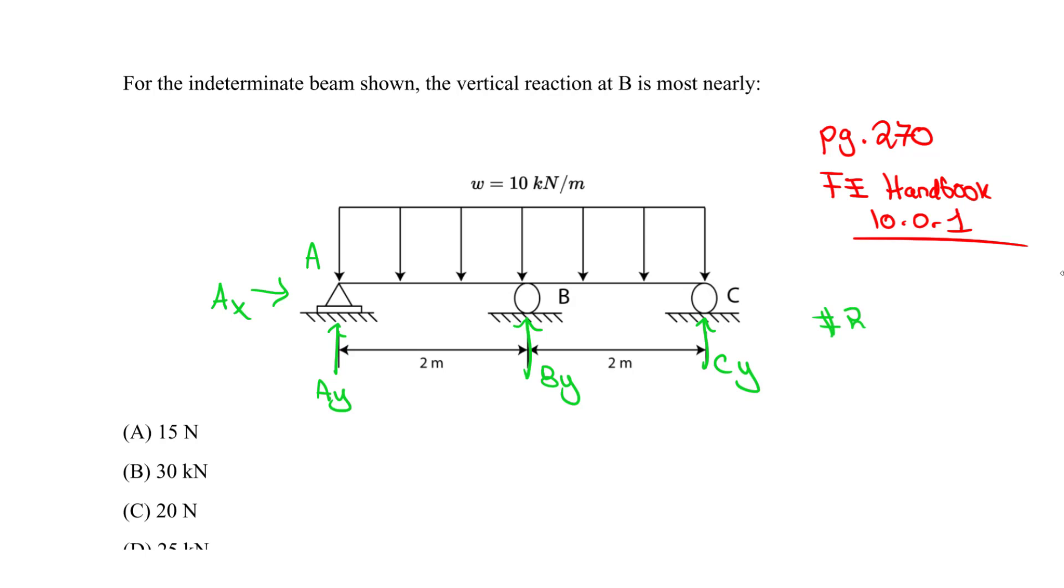The number of reactions equals 4. And the number of equations is how many? We have sum of forces in X equals 0, sum of forces in Y equals 0, and sum of moments equals 0. We have a single beam, so we only have three equilibrium equations. Number of equations equals 3. So 4 minus 3 is 1. Our degree of indeterminacy equals 1.